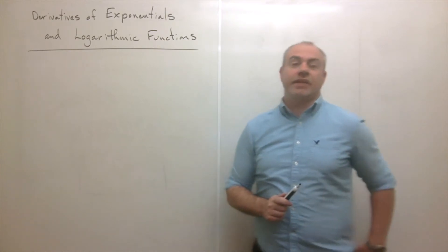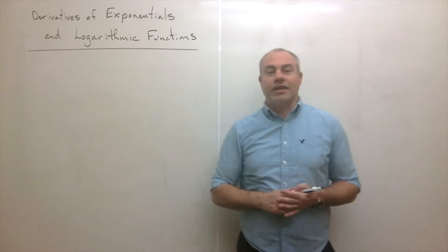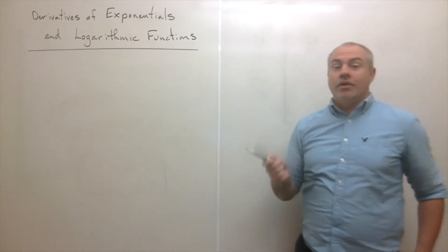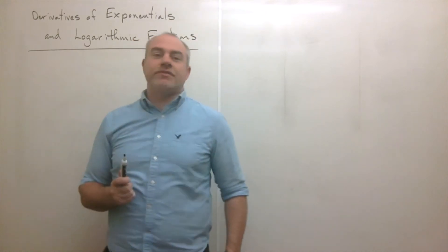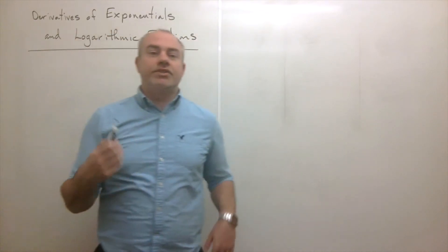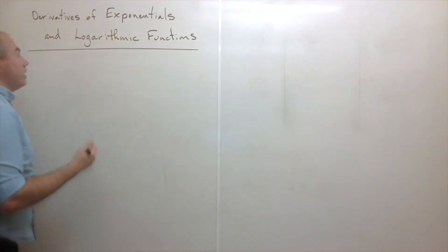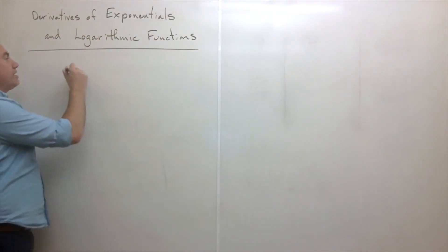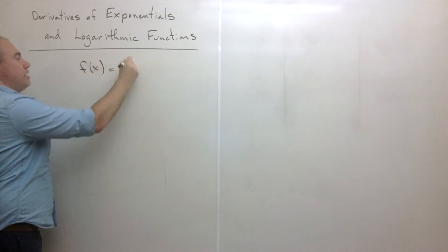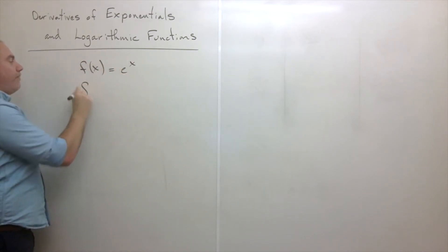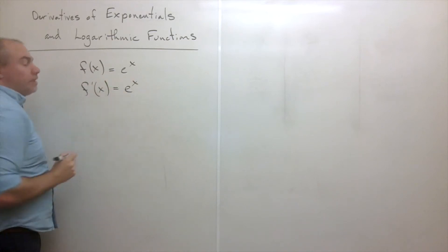Welcome back. Today I'd like to talk about the derivatives of exponential and logarithmic functions. Before we get started, let's review a few things we already know. The first one is: if f of x is equal to e to the x, then f prime of x is equal to e to the x.